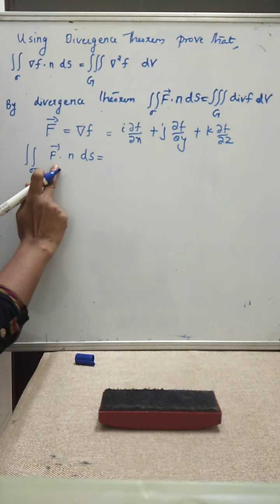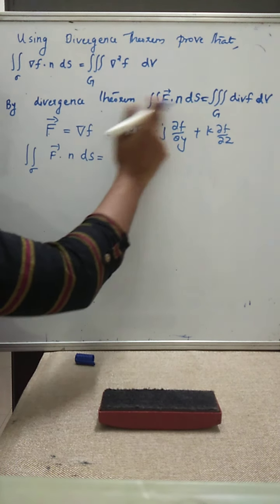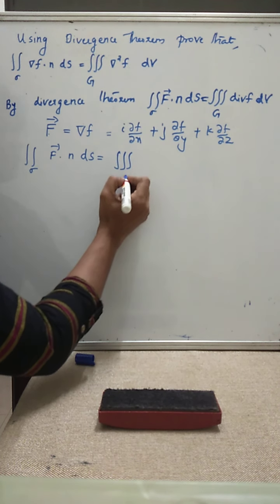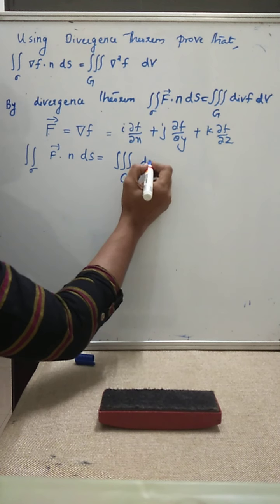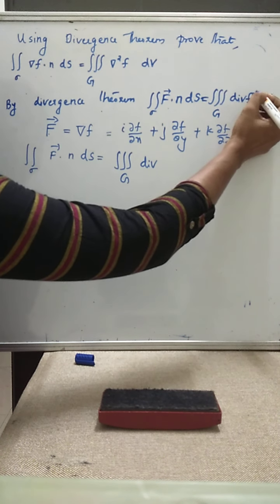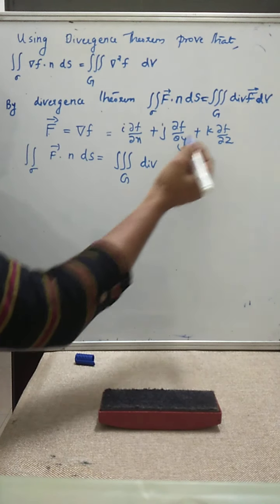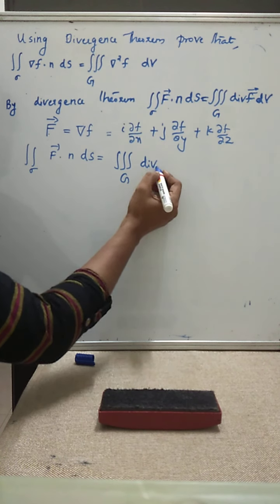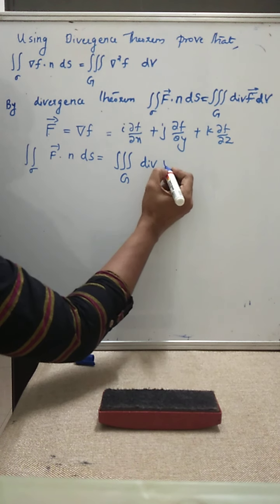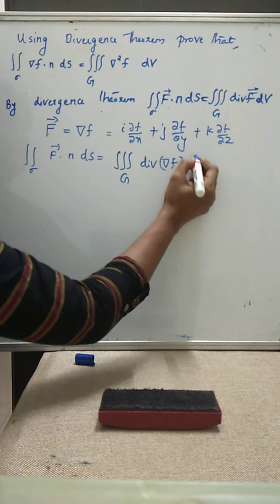The left hand side is F dot n dS. Then by the divergence theorem, the right hand side is the triple integral over G of div of capital F, which is capital F equal to del f. So we have div of del f dV.